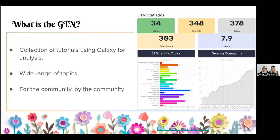So what's the GTN? The Galaxy Training Network is a collection of over 340 tutorials for galaxy analysis. This ranges from bioinformatics to life sciences to climate sciences, and now statistics, COVID analysis, and machine learning as well. It's a project that's by the community, for the community. It's been going on for eight years and we're really excited to bring you a lot of content in the Galaxy training materials.